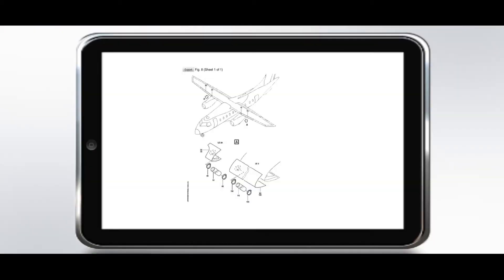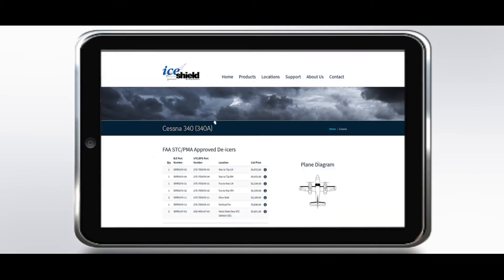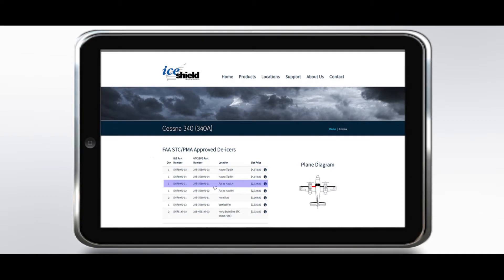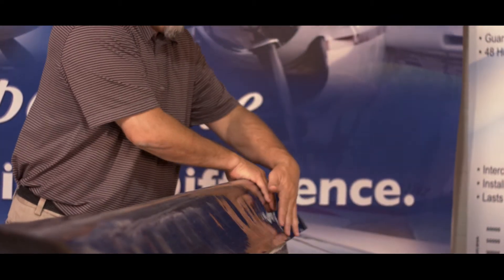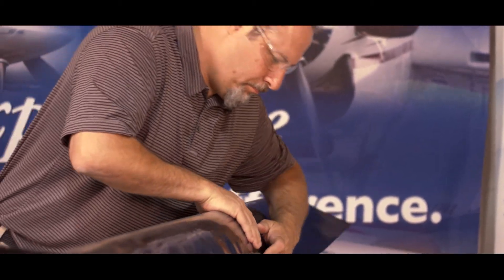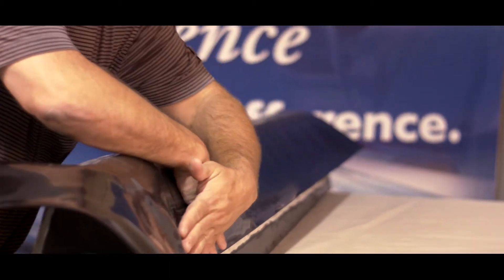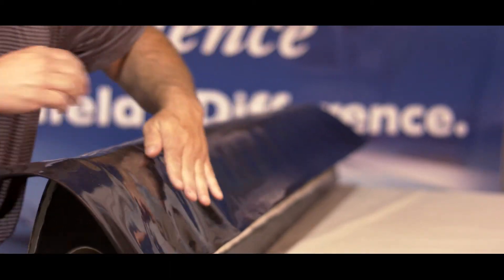Before starting the installation process, verify that you have the correct replacement de-ice boot for application. You can check this in the aircraft IPC or determine the part number of the previously installed boot. www.iceshield.com can be used as a reference. The first step of installing is dry fitting the new ice shield de-icer onto the leading edge surface, verifying the de-icer's length, width, air connection location, and cutout locations, if any.